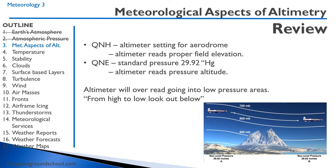QNH is the altimeter setting for the aerodrome, where the altimeter reads the proper field elevation. QNE is the standard pressure of 29.92 inches of mercury, and the altimeter reads the pressure altitude. Be really careful when going from high pressure or high temperature areas to low pressure or low temperature areas — from high to low, look out below.